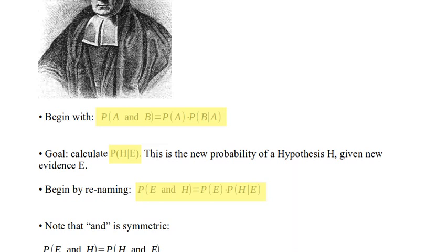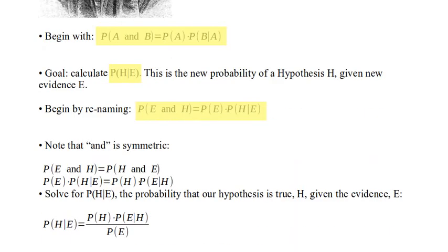We're interested in conditional probability. Finding 'ands' can be difficult, so we're going to try to get rid of those. We're going to get a different result than before with a little algebra. First, notice that 'and' is symmetric — you can put E first before H or H in front of E, and it is the same thing. So the probability of E and H is the same as the probability of H and E.